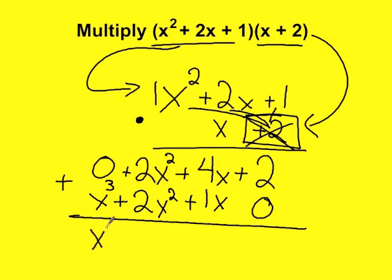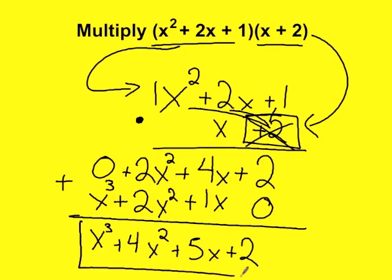0 plus x cubed is x cubed. 2 plus 2 is 4, and I keep the term. 4 plus 1 is 5. I keep the term. And 2 plus 0 is 2. So I'm left with x cubed plus 4x squared plus 5x plus 2.